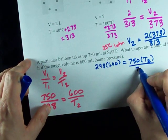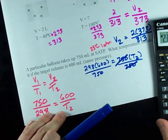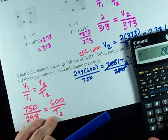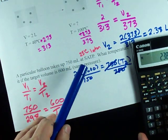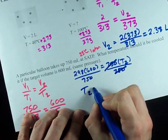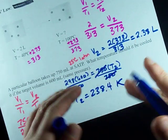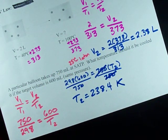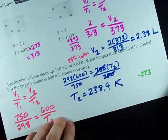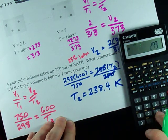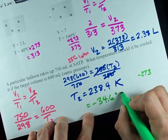And then all I have to do to isolate for T2 is divide both sides by 750. It's a beautiful thing. 298 times 600 divided by 750 gives me a T2 of 238.4. Now that's in Kelvin, remember, because like I told you, you're always going to do these things in Kelvin. To get it into Celsius, you subtract 273, technically 273.15. Minus 273, negative 34.6 degrees Celsius.